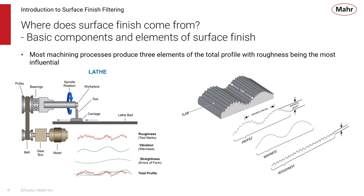Where does surface finish come from? It comes from the manufacturing processes. Most machining processes produce three elements of the total profile, with roughness usually being the most influential. On a typical lathe, a motor, gearbox, pulley, bearings, rotating spindle, and the tool all put their own signature on the surface. You can see roughness from tool marks, vibration or waviness from motor or bearing issues, and straightness errors from the bed lathe. All those things are tied together into one surface, and filtering helps us pick out the individual parts.